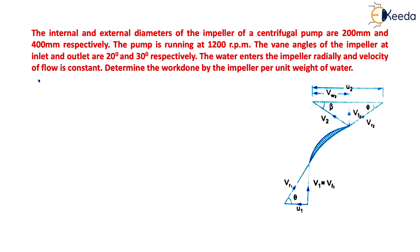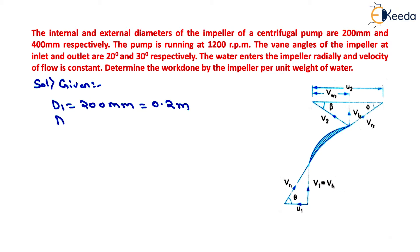We will write the given quantities first. Internal diameter of impeller, D1, equals 200 mm, which we convert to 0.2 meters. Similarly, external diameter of impeller, D2, equals 400 mm, which is 0.4 meters. Speed is also given as N equals 1200 rpm.